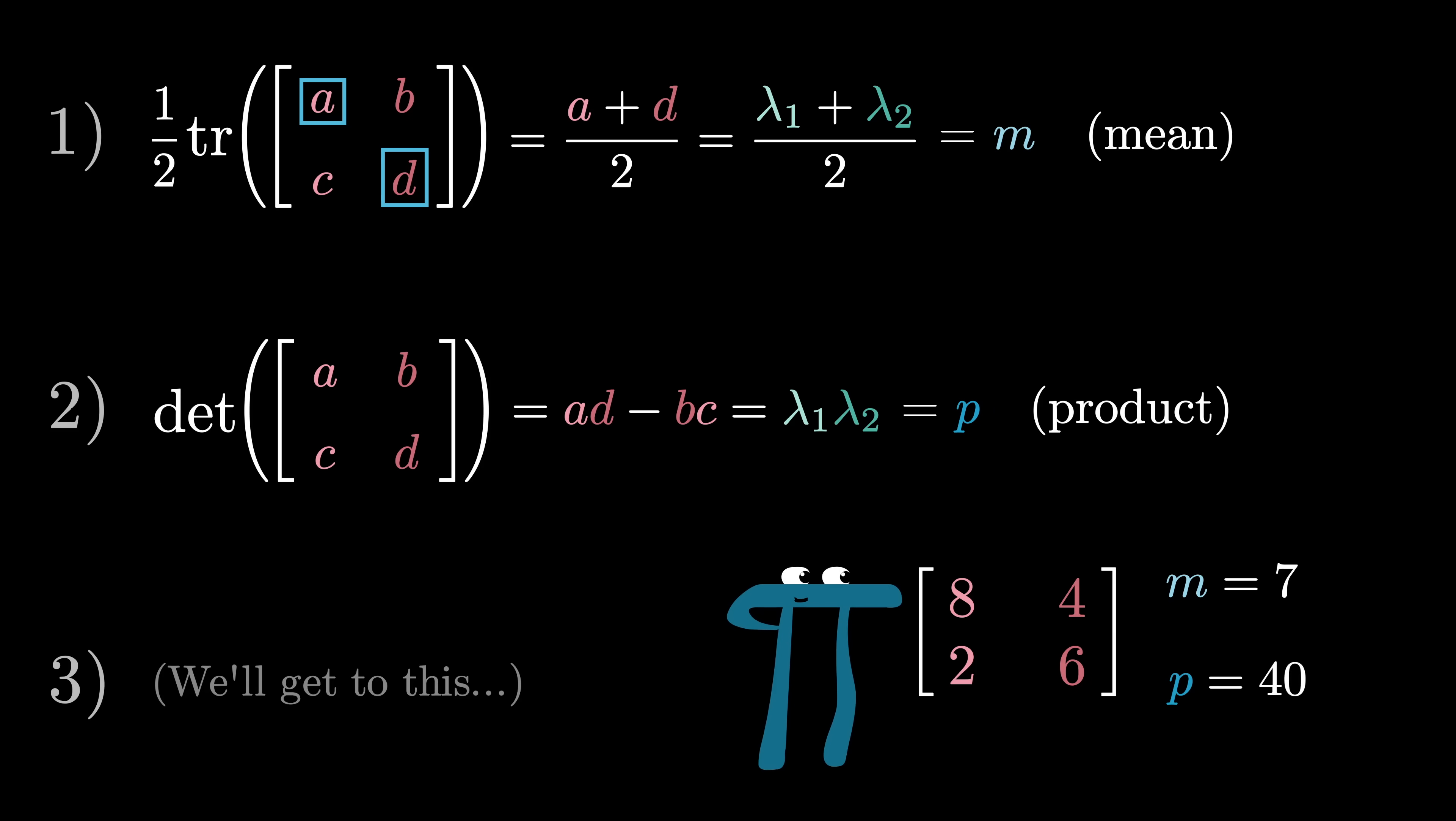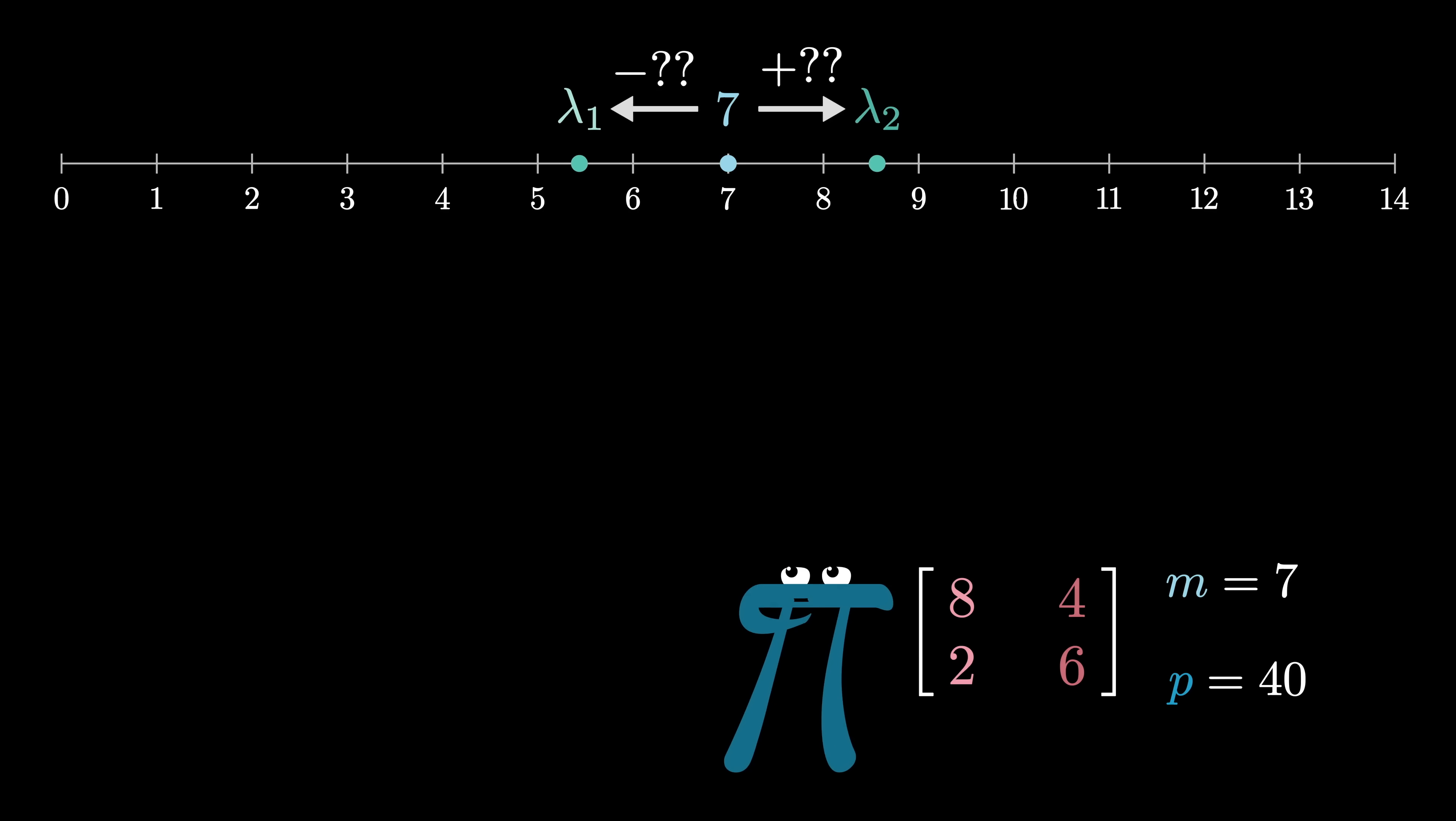Now take a moment to see if you can derive what will be our third relevant fact, which is how you can quickly recover two numbers when you know their mean and you know their product. Here let's focus on this example. You know that the two values are evenly spaced around the number 7, so they look like 7 plus or minus something. Let's call that something D for distance.